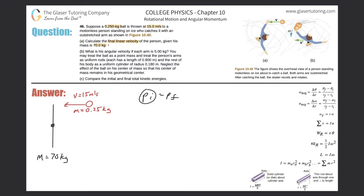Expanding the momentum equation: there are two objects — the ball and the person. The person is motionless so their initial momentum is zero. The ball's initial momentum is mass times velocity. This is an inelastic collision — once the ball sticks in the person's hand, the final linear momentum equals the combined masses of the person plus the ball, multiplied by the final velocity.